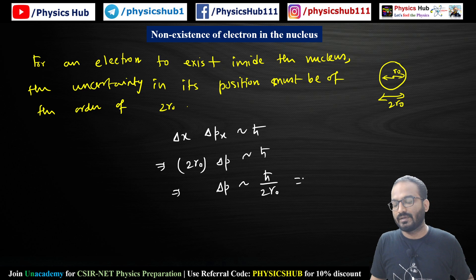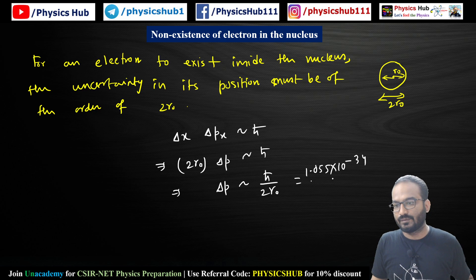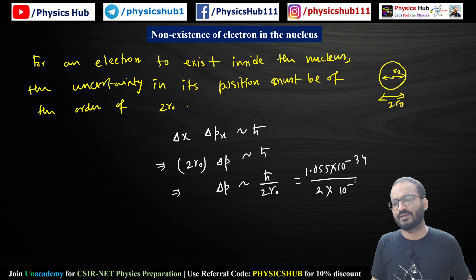If you put the value of ħ as 1.055×10⁻³⁴, divided by 2 times r₀, where r₀ has the order of 10⁻¹⁴, you can calculate the value of Δp.